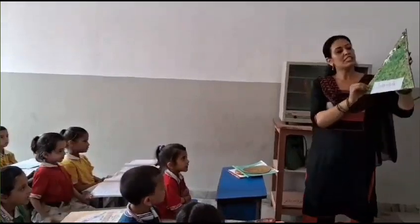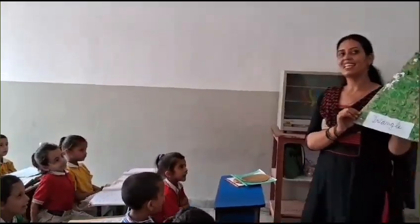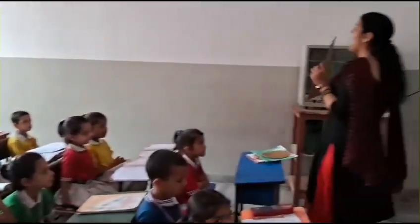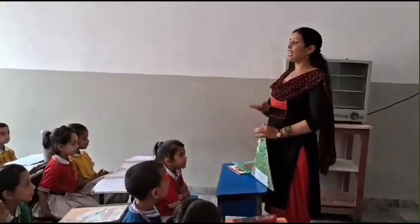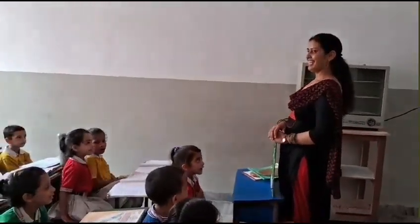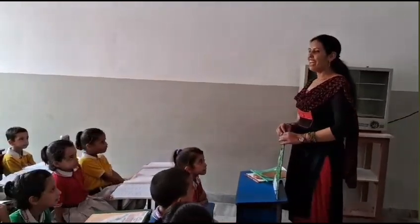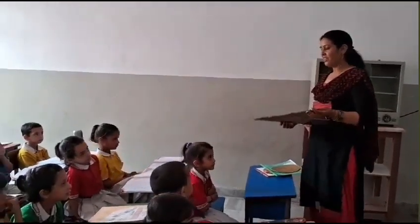Next one is? Which shape is it? Triangle. Triangle. How many corners in the triangle? Three. Very good.